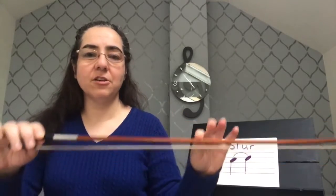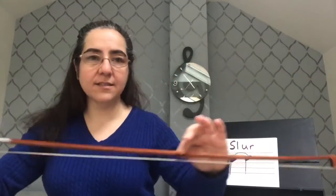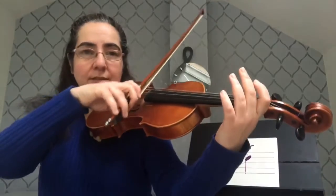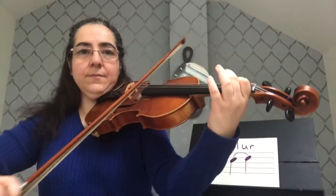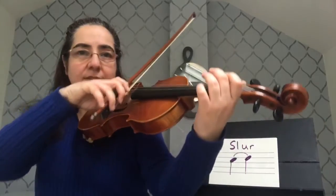Another really important thing to note is that if I have two notes that are slurred, I want to divide my bow in half. I want to use the first half of the bow for the first note, and the second half of the bow for the second note. That's going to give you a very even sound. If you use too much bow on one note and not enough on the other, you'll get an uneven sound — a big swell on one note and almost nothing on the other.